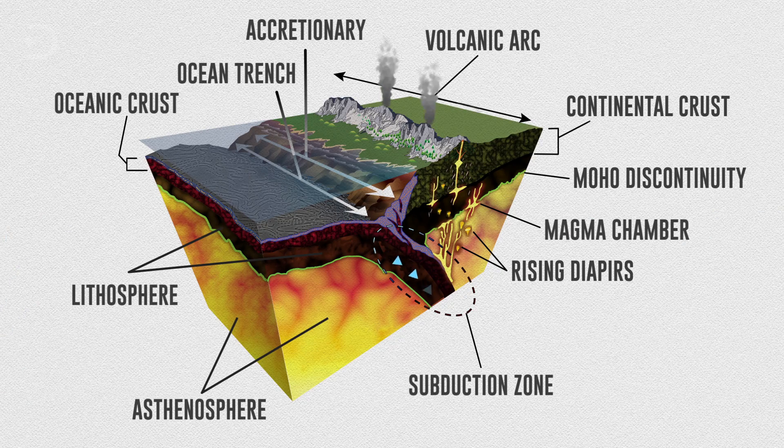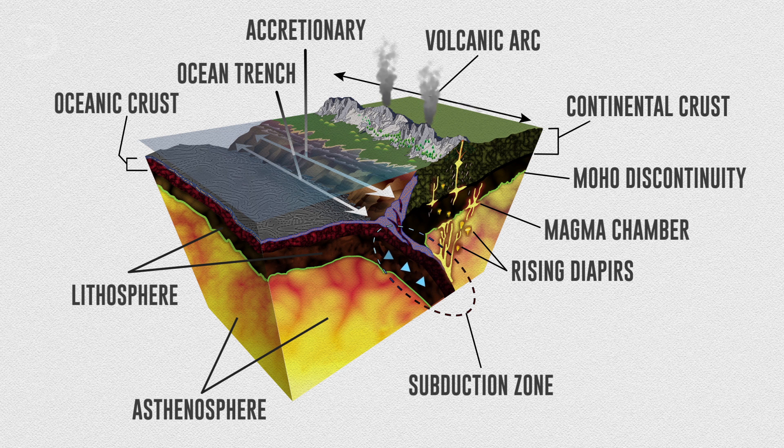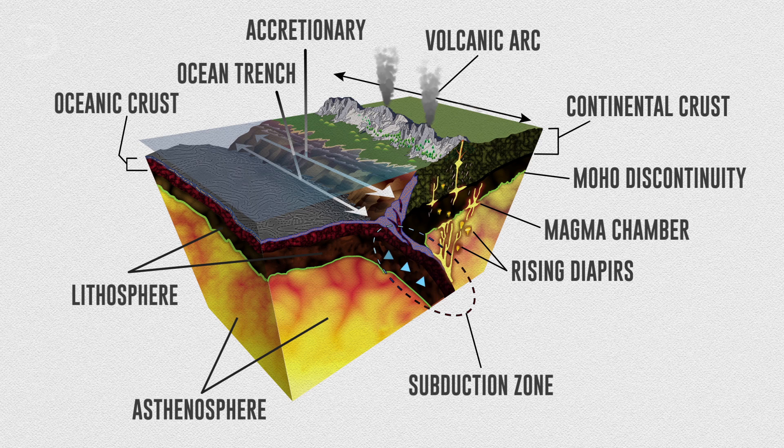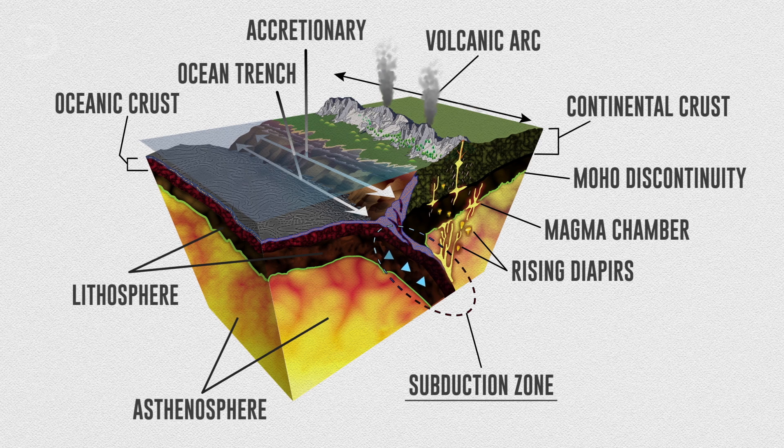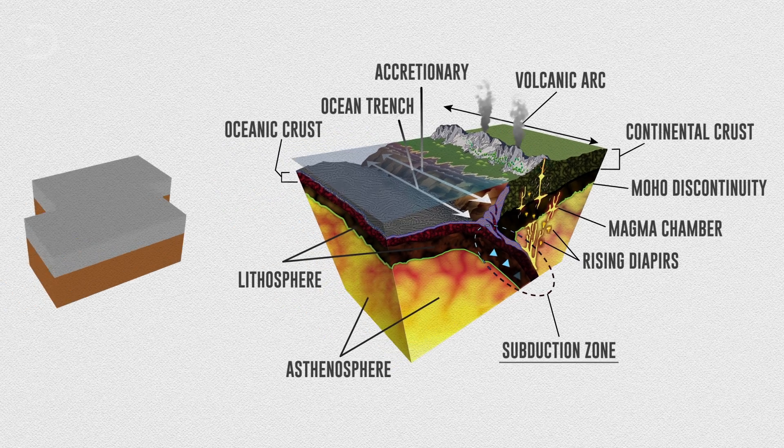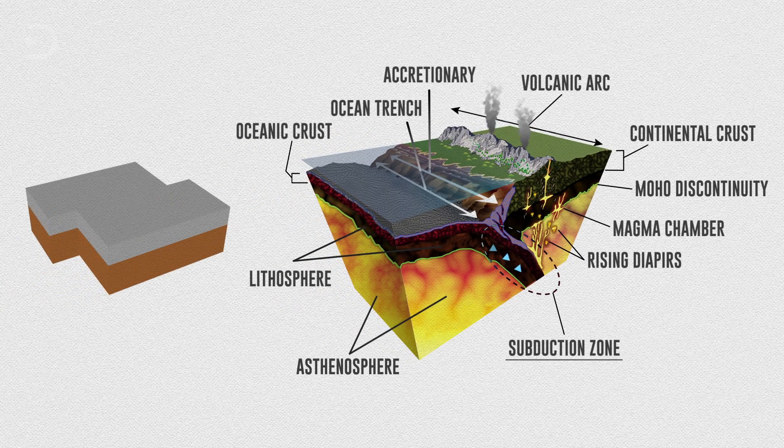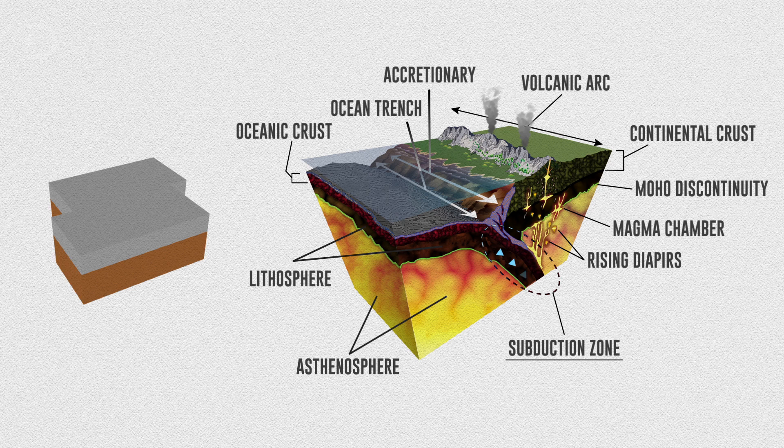However, a new startling discovery made by researchers has shown that the Earth is devouring three times as much water as once previously thought, through what are called subduction zones. These boundaries mark the collision between two of the planet's tectonic plates, which are gigantic pieces of Earth's crust that slowly move across the surface over millions of years.